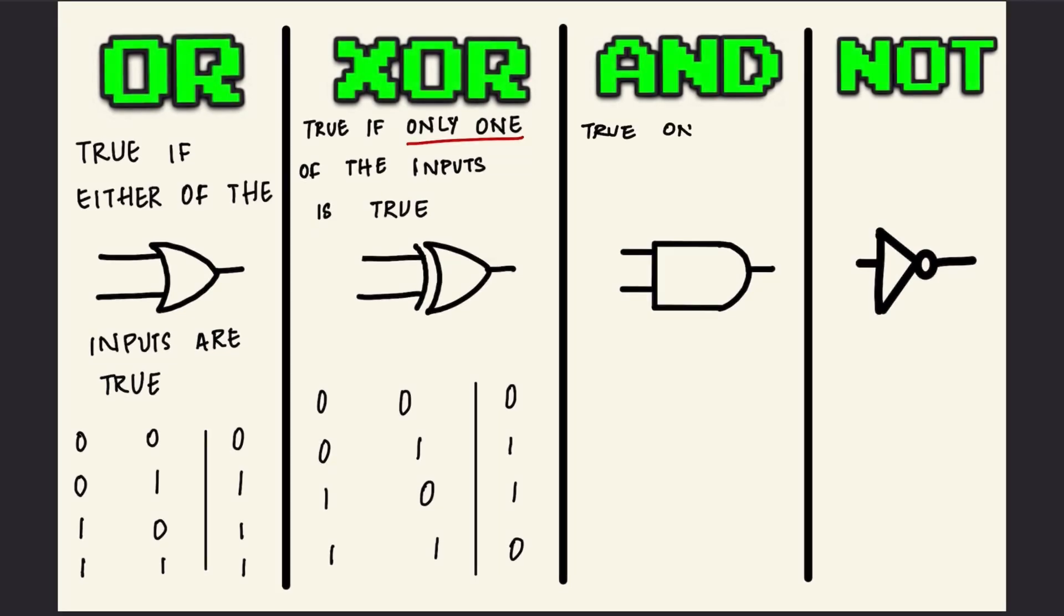The AND gate outputs true only when both of its inputs are true. So 0 and 0 gives 0, 0 and 1 gives 0, 1 and 0 gives 0, and only 1 and 1 gives 1.